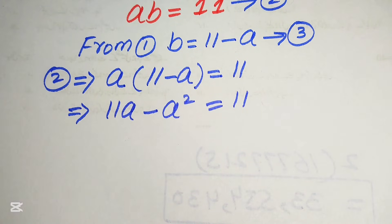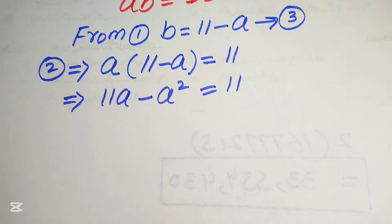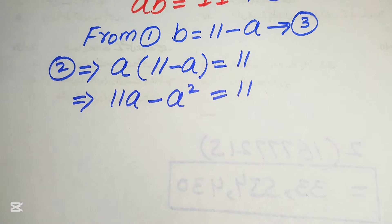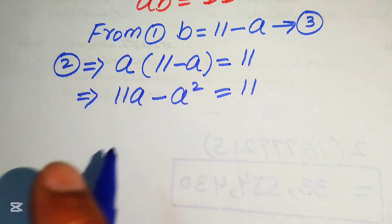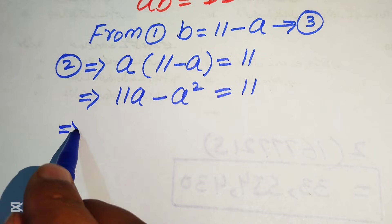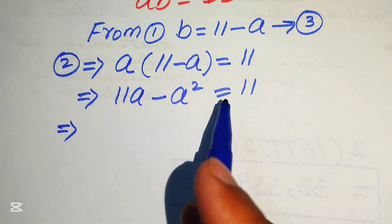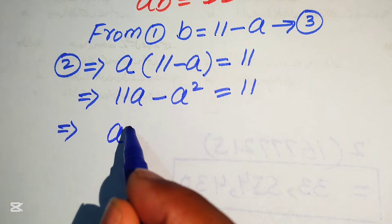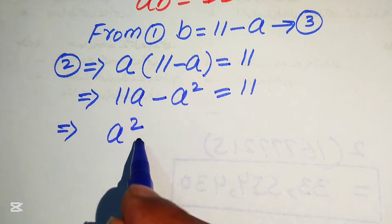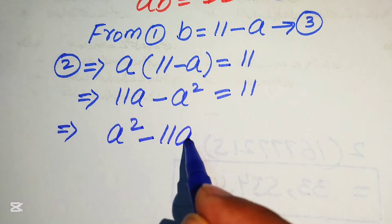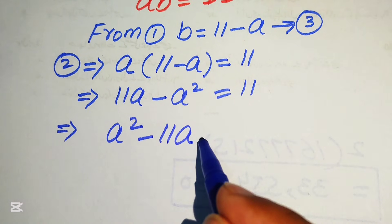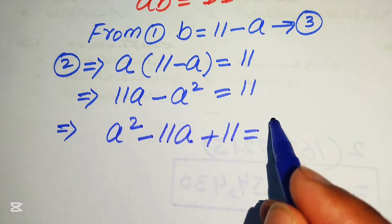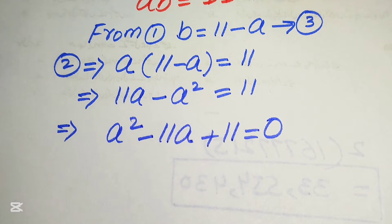Now this equation will become quadratic in variable a, but not in standard form. So first we write it in standard form — we move these terms to the right hand side: minus a squared becomes plus a squared, plus 11a becomes minus 11a, and 11 stays on the right hand side, so the whole equation equals to 0.